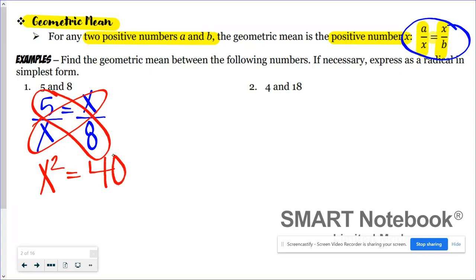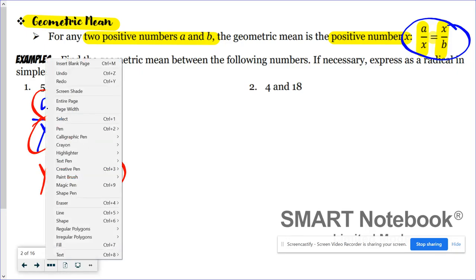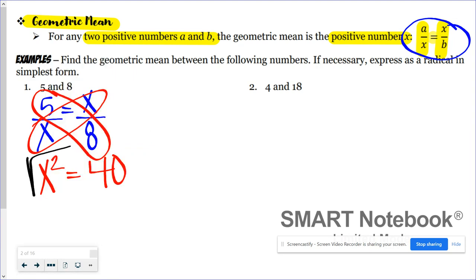Now I need to find x because remember, the geometric mean is the positive number x. That's going to require me to take the square root of both sides, so x equals the square root of 40.